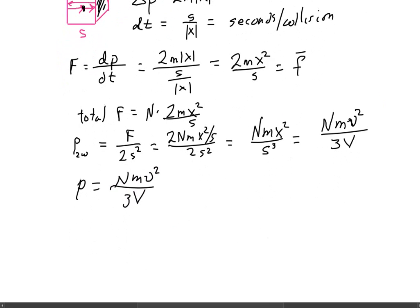That's what we just had. And then if I move this apart just a little bit, I get 3PV is equal to NM nu squared. Now, notice this right here is very nearly kinetic energy, nearly KE.